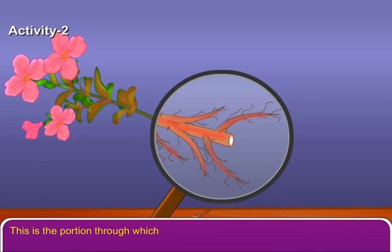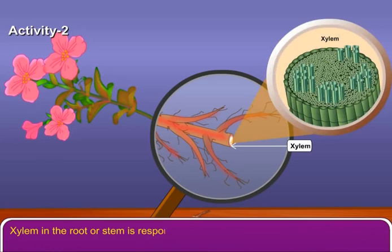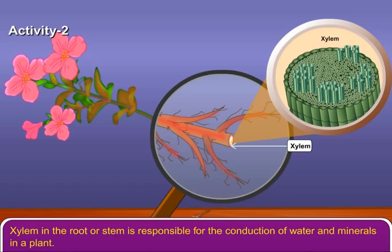This is the portion through which the colored water has moved up. This colored portion is known as xylem. Xylem in the root or stem is responsible for the conduction of water and minerals in a plant.